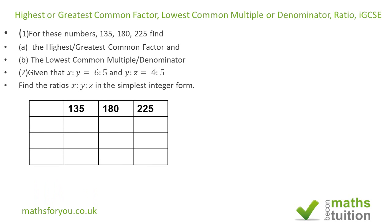For the first question, we arrange the three numbers in columns. Starting from 2, the first prime number, we can see that 2 is not a common factor for all three. Then, adding the digits for each number — for instance 1+3+5 gives 9, which is a multiple of 3 — and the same applies to 180 and 225. So all three numbers have 3 as a common factor. Dividing by 3: 135÷3=45, 180÷3=60, 225÷3=75.